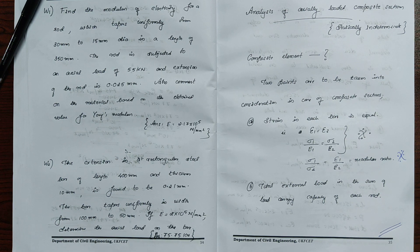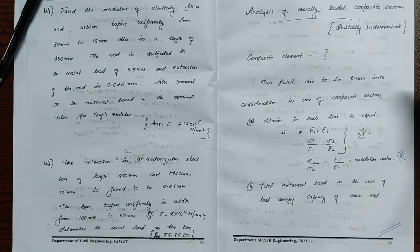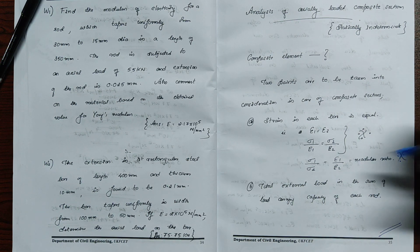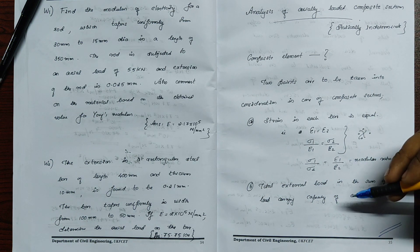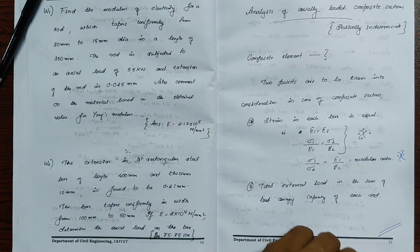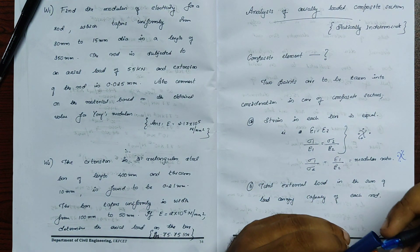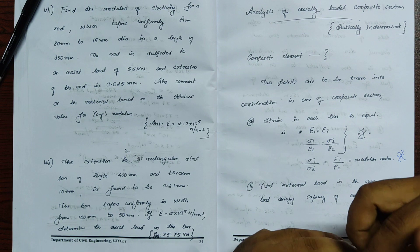The total external load is the sum of the individual load carrying capacities. The total load carrying capacity equals the combined capacity of both materials in the composite section.